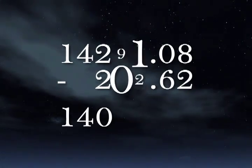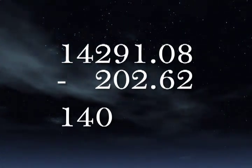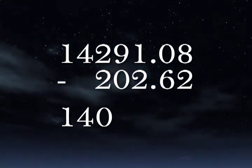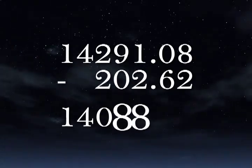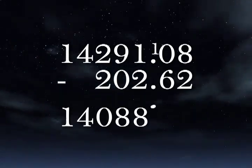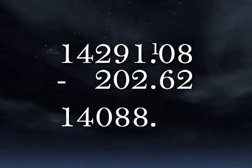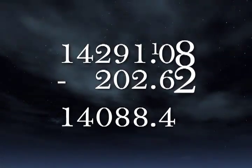In the next two rows, 91 minus 02 is 89, but the column to the right will need to borrow, so we write 88. On the next column, 10 minus 6 is 4, and then 8 minus 2 is 6.